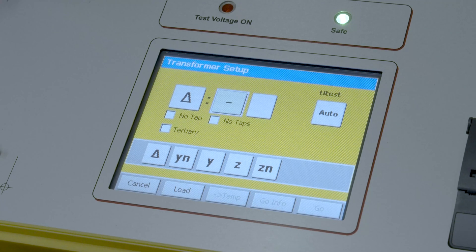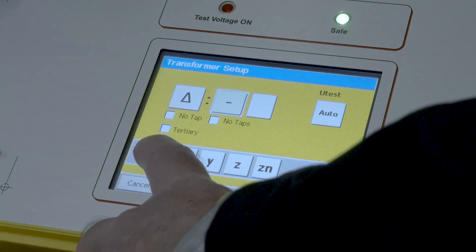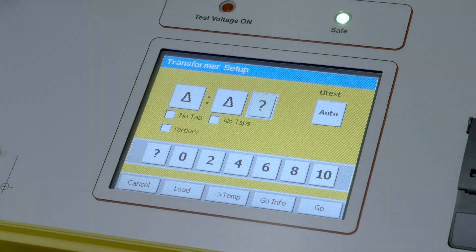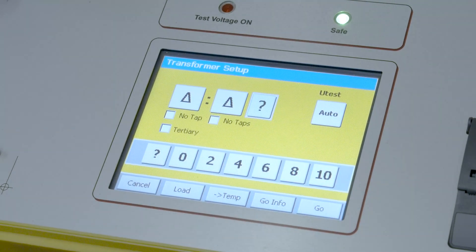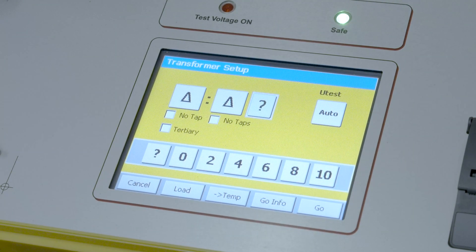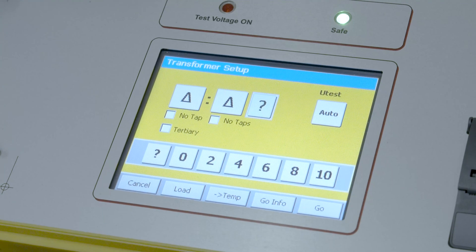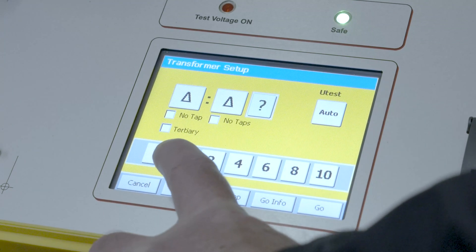We're going to once again select a delta and then the numbers relate to a phase relationship between the primary and secondary. And because there is no phase shift we're simply going to select zero to indicate that.